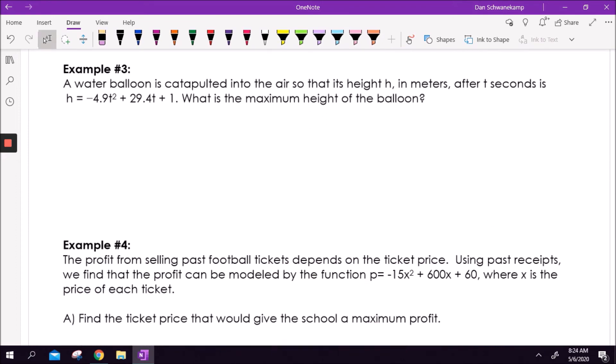A water balloon is catapulted into the air so that its height in meters after t seconds is given by h(t) = -4.9t² + 29.4t + 1. Here is my equation that is telling me the height in meters. Time is in seconds. What is the maximum height of the balloon? We're launching it up in the air. It's going to reach a maximum and then fall back to earth. This equation tells me the height. To find the height, I'm going to have to find the vertex.